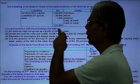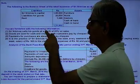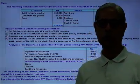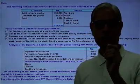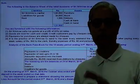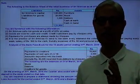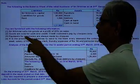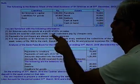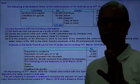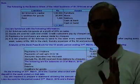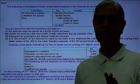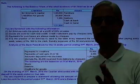You are furnished with the following information. One: Srini Maas sells goods at a profit of 20% on sales. Whenever the percentage of profit is given, anything relevant to the trading account may be missing — either closing stock, opening stock, purchases, or sales. Goods are sold for cash and credit. Credit customers pay by cheque only, so credit sales are recovered only by cheque. Payments for purchases are always made by cheque, so there are no cash purchases.